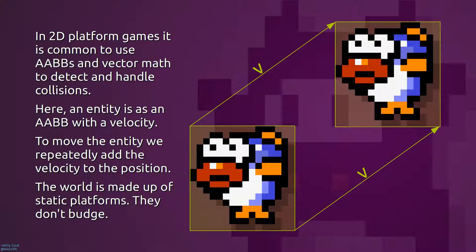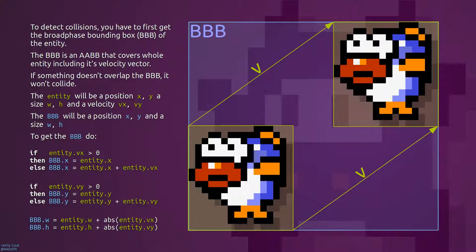To move the entity over time, we repeatedly add the velocity to the position. To detect collisions, you first have to get the broadphase bounding box.